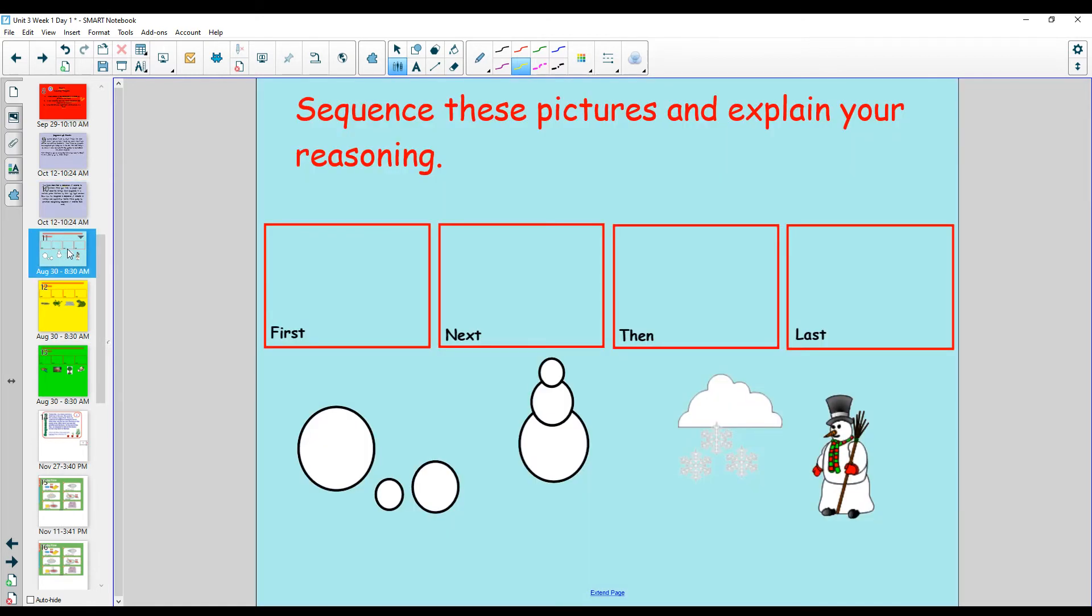So let's just look at some pictures. We're going to sequence these pictures and explain our reasoning. First, what has to happen first when I look at these pictures? Well, first, it has to snow, and we have to get a lot of snow on the ground.